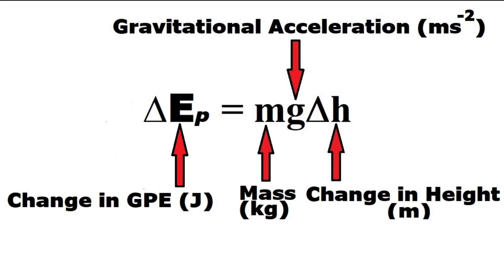Now we know how to work out how much gravitational potential energy is stored in an object at a given position. Let's now work out the change in gravitational potential energy stored in an object when its positioning changes in relation to its height above the ground. We need to use the following equation, which states that to calculate the change in GPE — given in joules — we must multiply its mass, given in kilograms, by the value given to acceleration due to gravity, given in metres per second squared, and then multiply by the change in height of the object's position in relation to the ground, which is given in metres.